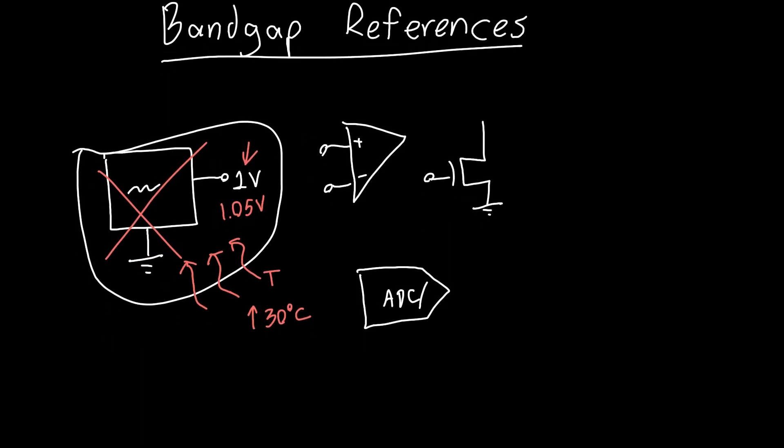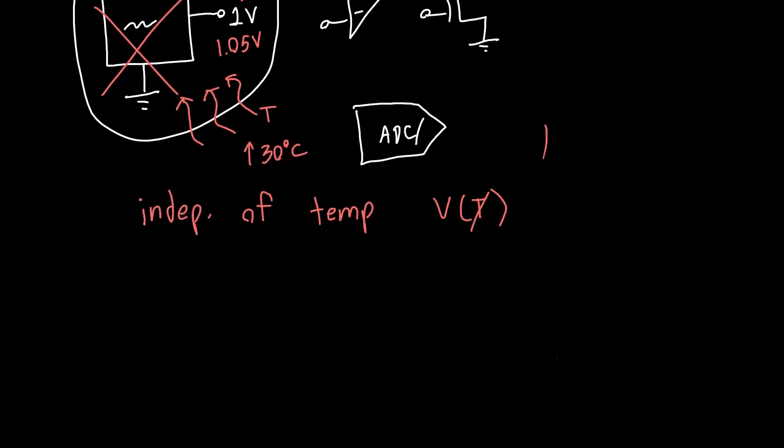So we need a circuit that's independent of temperature. In other words, we want to generate a voltage that is not a function of temperature. We want to generate a voltage that is constant when you heat up and cool down the device.